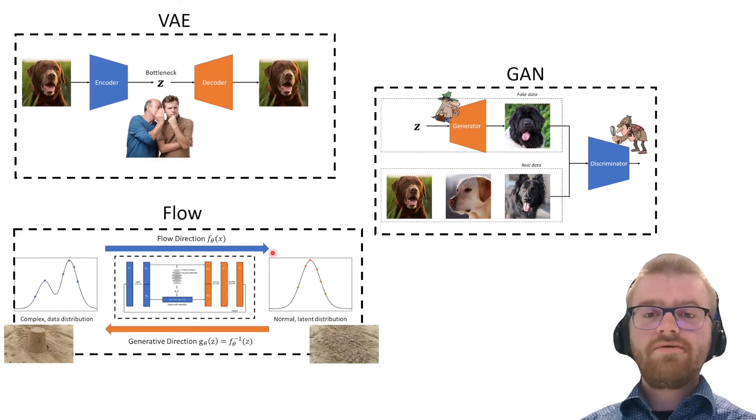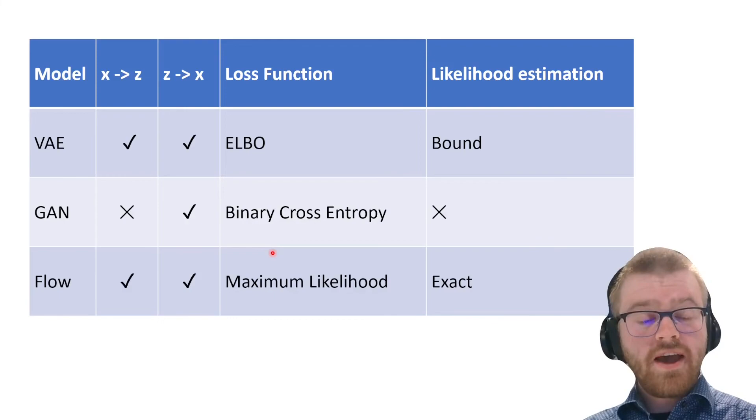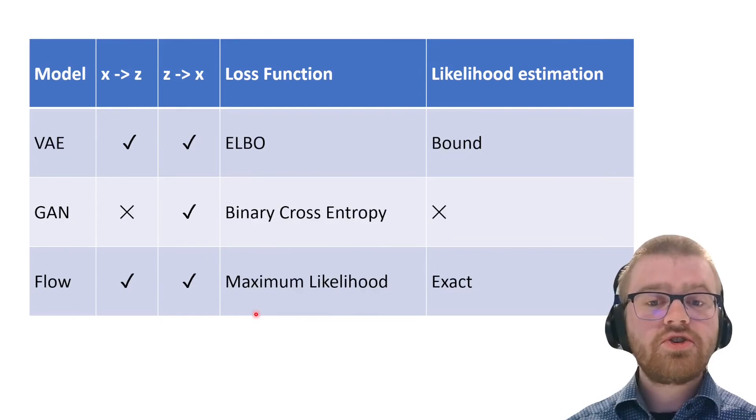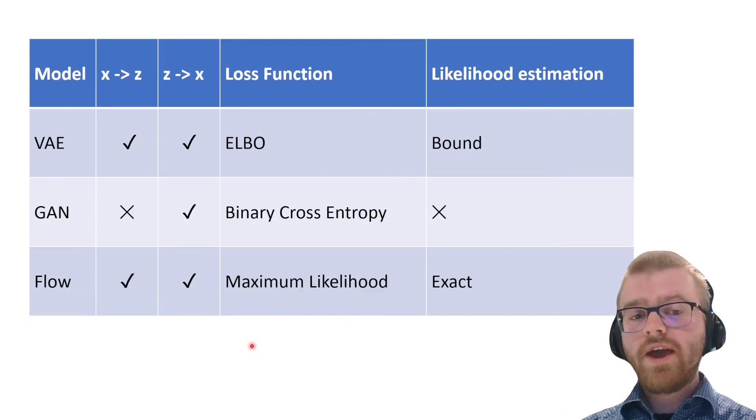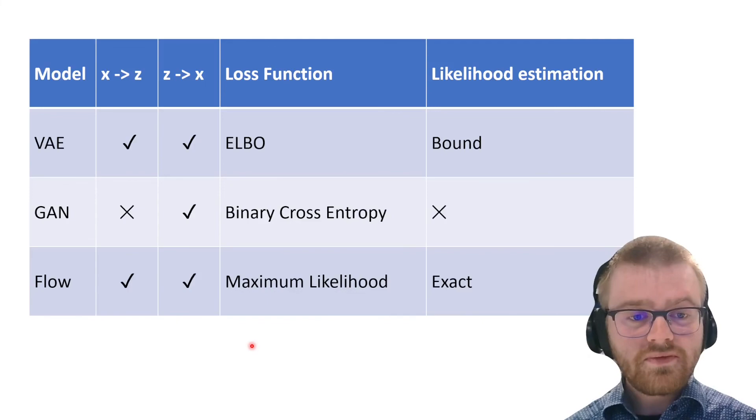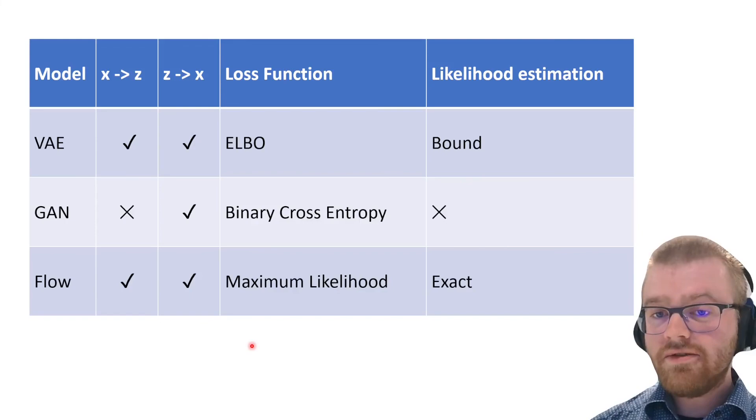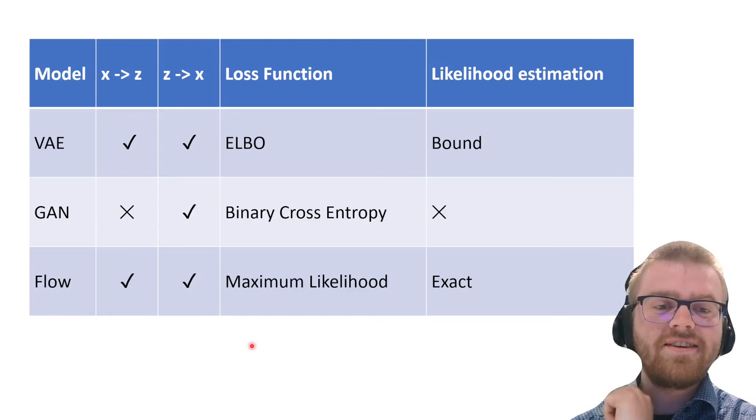To summarize, we've seen VAEs, GANs, and flows. A VAE maps x to z and z back to x, we train using the evidence lower bound, and we cannot do exact likelihood estimation but can get a bound. In a GAN, there's no way to go from x to z, but we have a generator mapping z to x, and the loss function is binary cross entropy. There's no likelihood estimation in a GAN. In a flow, we can do both mappings—they are exactly invertible. The loss function is maximum likelihood, and we can do exact likelihood estimation.